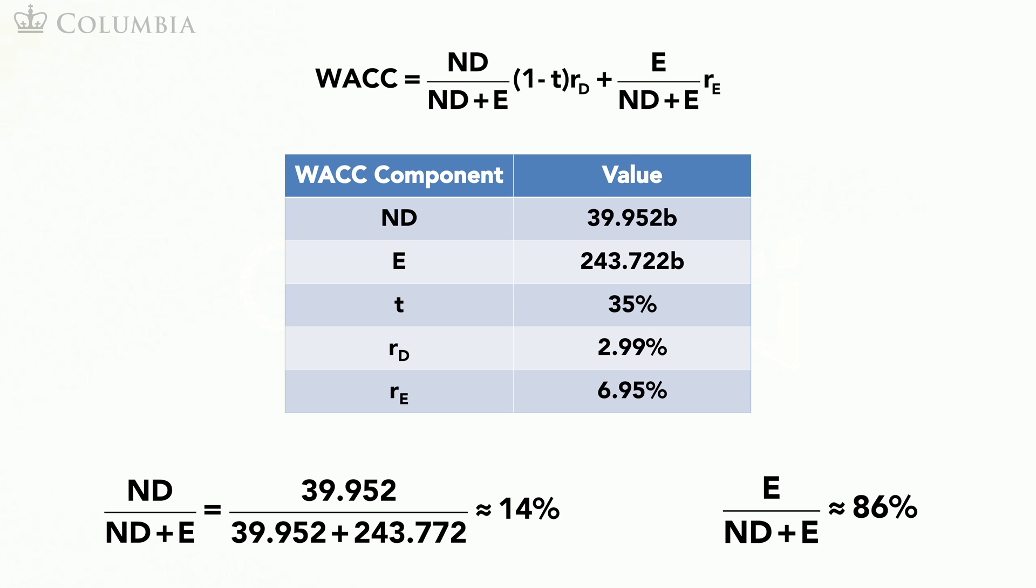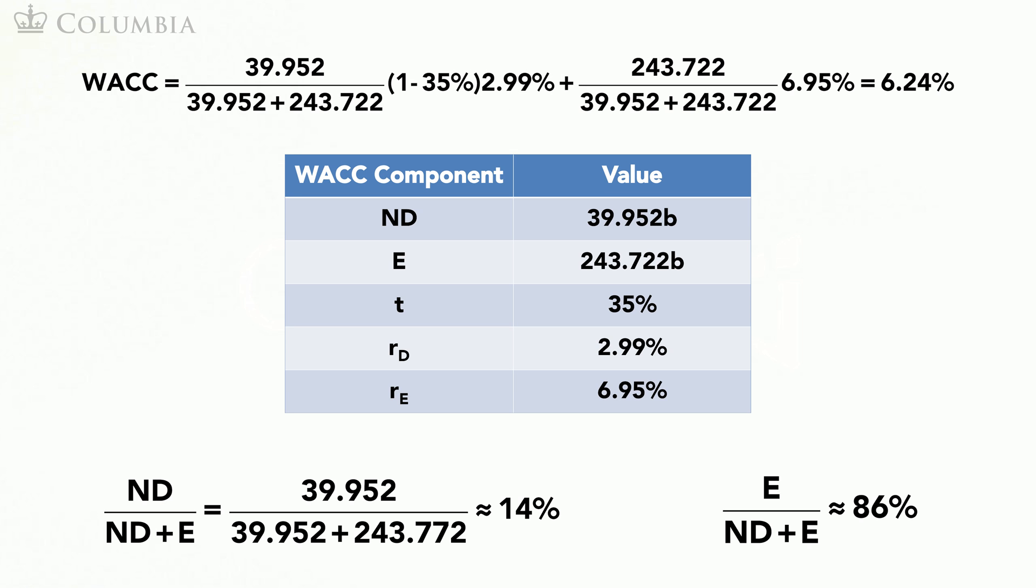Using this cost of equity together with the rest of the input for the weighted average cost of capital leads to a weighted average cost of capital of 6.24%.